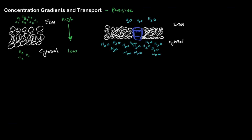Does passive transport require energy? No. For the image on our left, what type of diffusion is this — simple diffusion or facilitated diffusion? Simple. So we're looking at simple diffusion, and when we say it's simple it means no proteins are involved with the transport of the molecules. No proteins are involved in moving oxygen across; oxygen will just diffuse naturally down its concentration gradient.